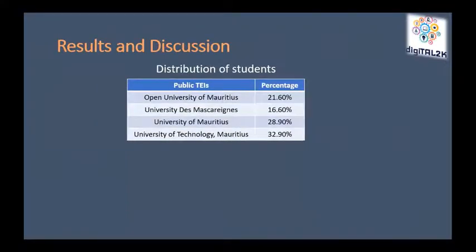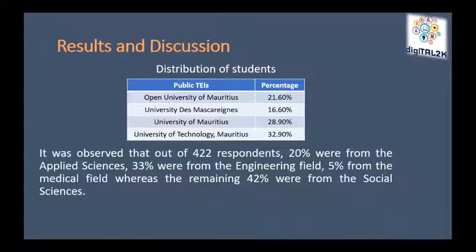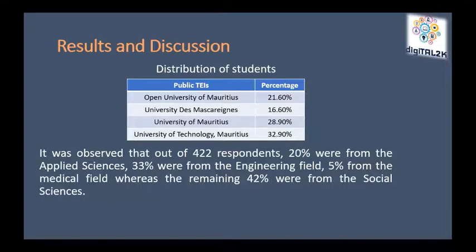Four TEIs in Mauritius were included. The response rate from the Open University was 21.6%, the University of Mauritius 28.9%, and the University of Technology Mauritius 32.9%. Out of the 422 respondents, 20% were from applied sciences, 33% from engineering, 5% from medical fields, and the remaining 42% from the social science field.